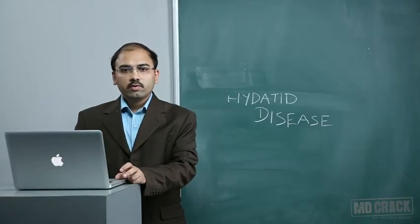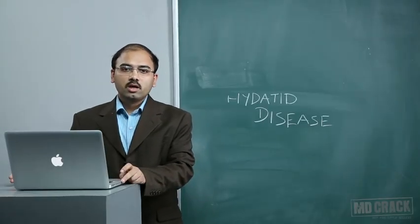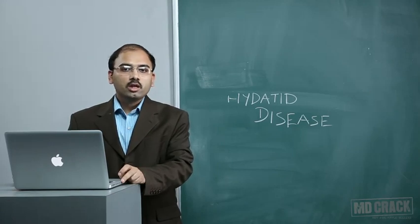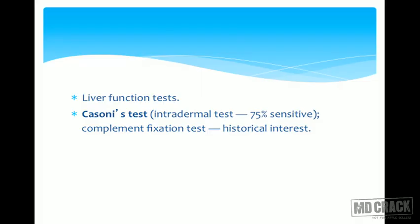Liver function tests including liver enzymes and bilirubin can document hepatic cell dysfunction. Casoni's test is an old intradermal test with 75% sensitivity, no longer done nowadays. The complement fixation test is also available. Questions may ask about immunofluorescence or complement fixation tests.